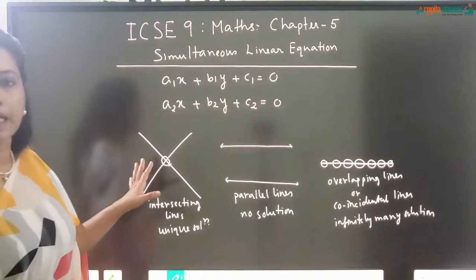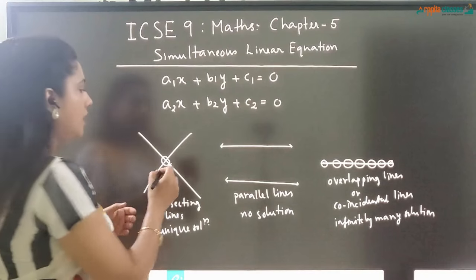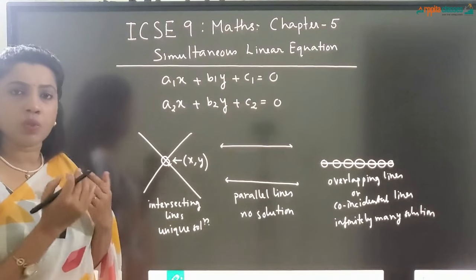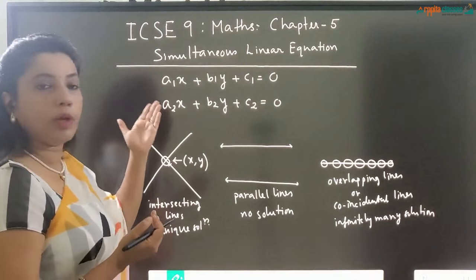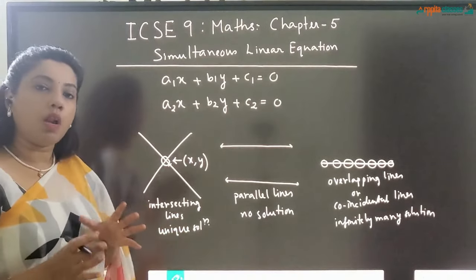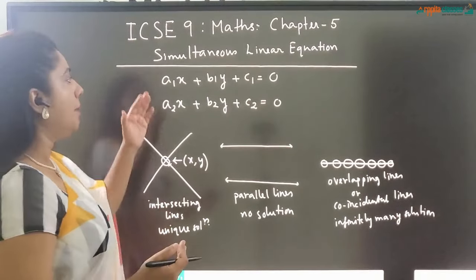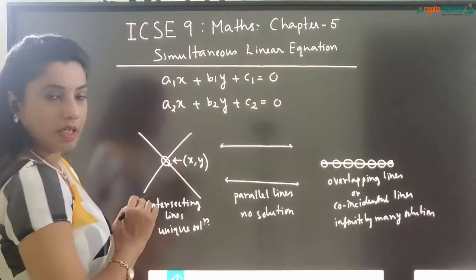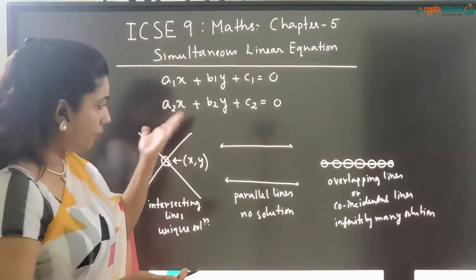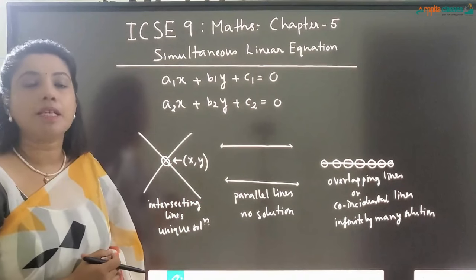If they are intersecting lines they have a unique solution and we have to find out that unique solution — the value of x and y — to find the common point where they are intersecting. That is how we are going to solve these two equations simultaneously, taking them together. Since we are solving them together to find the common point — or to determine whether they are parallel lines or coincidental — we solve them simultaneously. That is why the name of the chapter is Simultaneous Linear Equation.